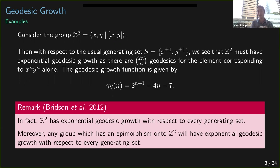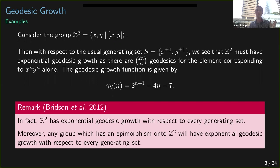In this case we can compute the geodesic growth function explicitly. It's also a fact that it doesn't matter which generating set you choose for Z²: it will always have exponential geodesic growth. Furthermore, if a group has an epimorphism onto Z², then that group also has exponential geodesic growth for every generating set, because we can always lift any geodesic in Z² back up to the group through this epimorphism.